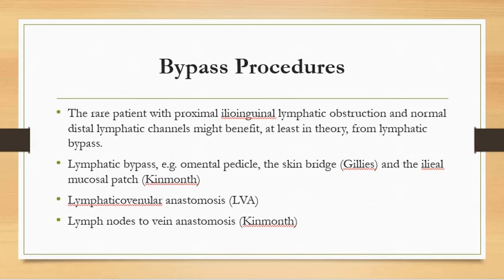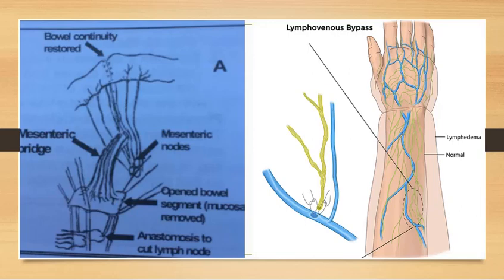Options for lymphatic bypass include omental pedicle and skin bridge in the Gillies procedure, and ileal mucosal patch (Kinmonth procedure). Lymphatico-venular anastomosis can be performed when lymphatic channels are appreciably dilated, and lymph node-to-vein anastomosis (also Kinmonth). In the ileal mucosal patch, a mucosal patch is taken from the bowel, maintaining bowel continuity, and anastomosed to the cut lymph nodes. If dilated lymphatics are present, lympho-venous bypass anastomoses the dilated lymphatics with venous channels to improve lymphatic drainage.